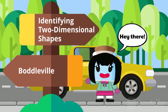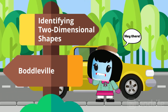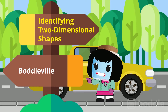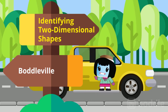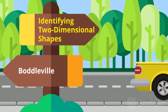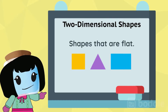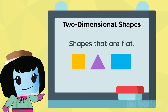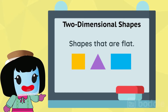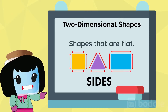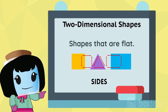Hey there! Today we're going to talk about two-dimensional shapes and how to identify them. Two-dimensional shapes are shapes that are flat. We can describe these shapes by the number of sides they have and their angles.